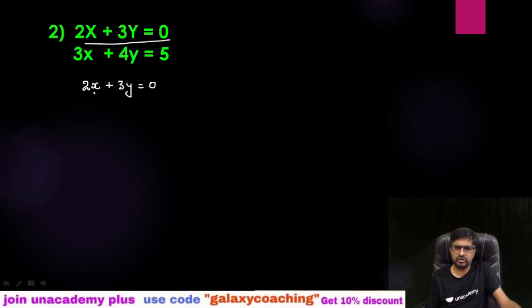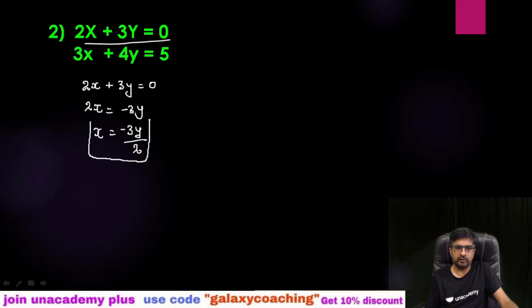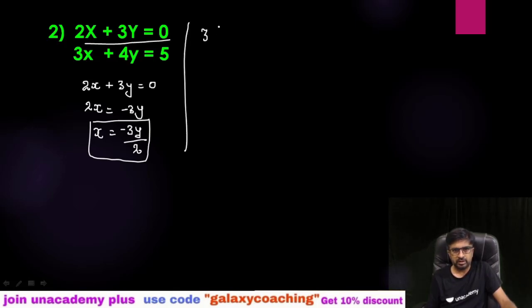You can find out x or y — any term you want — but I am generally finding x only. First of all, take all the other terms to the other side except the term with x. So minus 3y goes to the other side, and x equals minus 3y by 2. Now I have the value of x from the first equation, and I am going to substitute it in the second equation.